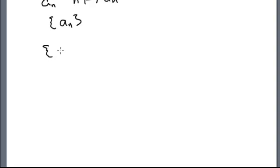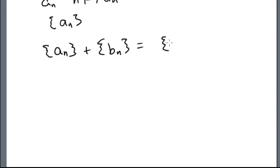The definition of addition of sequences is very easy. We have two sequences A sub n and B sub n, and their sum is just the sequence whose terms are the sums of the corresponding terms — we're adding the corresponding terms. This addition is addition of complex numbers.